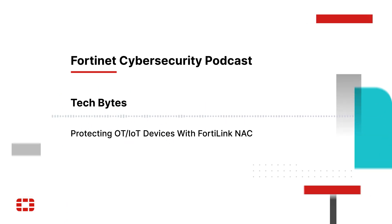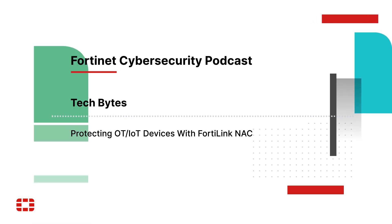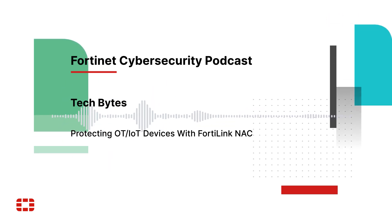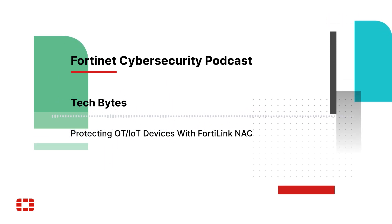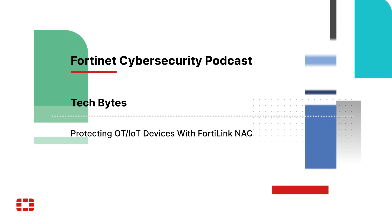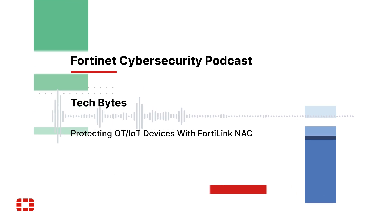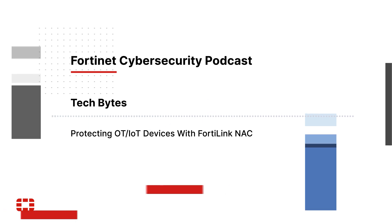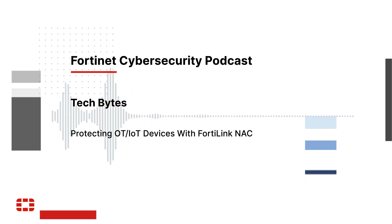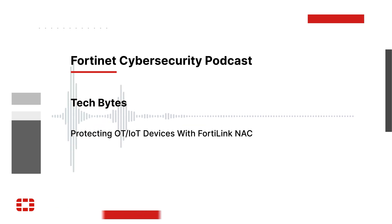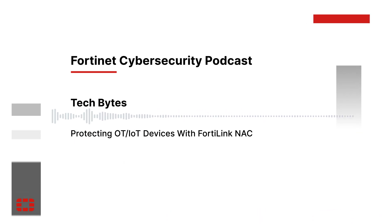To clarify one last point: virtual patching is available with both FortiLink NAC and FortiNAC. It all comes down to where the patch is deployed. In a FortiLink NAC scenario, the patch is deployed as close to the edge as possible — on the switch port or WLAN. From a FortiNAC perspective, the patch is deployed at the FortiGate, so depending on where the FortiGate is placed, that's where the patch would be implemented.